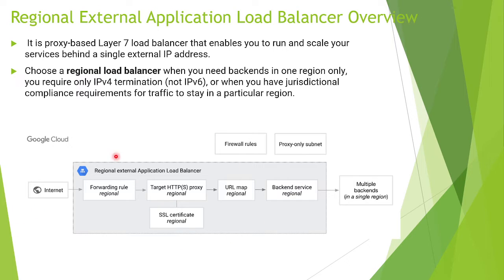The traffic flow is the same as global: from the internet, traffic first hits the forwarding rule, which is a regional forwarding rule, then it goes to our proxy. We can use SSL certificates but only regional certificates — Google does not provide a regional certificate as of now, it only provides global certificates. After that we have a URL map, then backend services, and we can have multiple backends in a single region. We also need firewall rules and a proxy-only subnet.